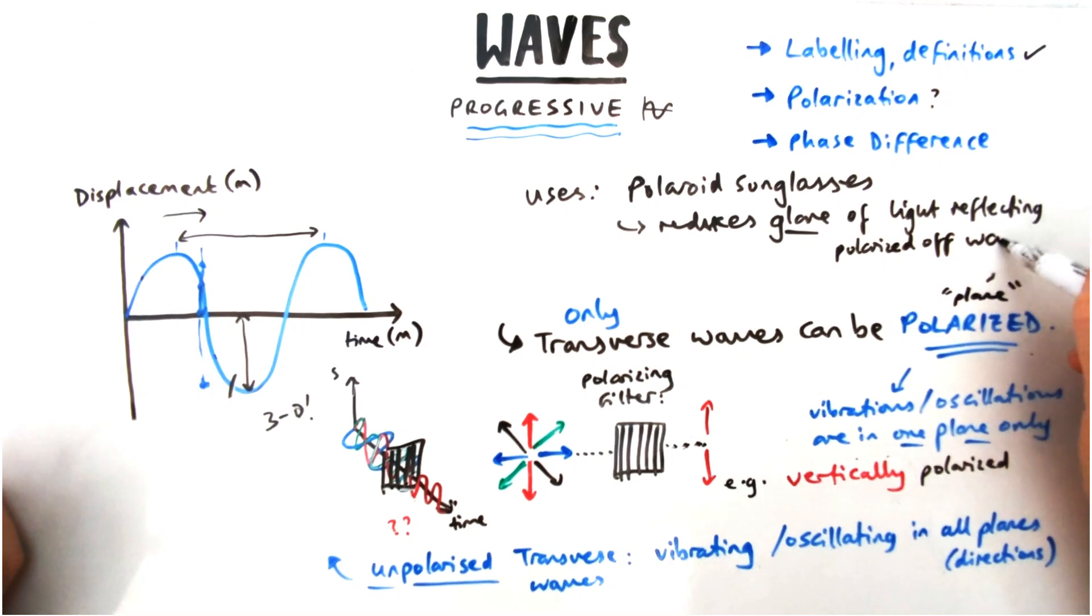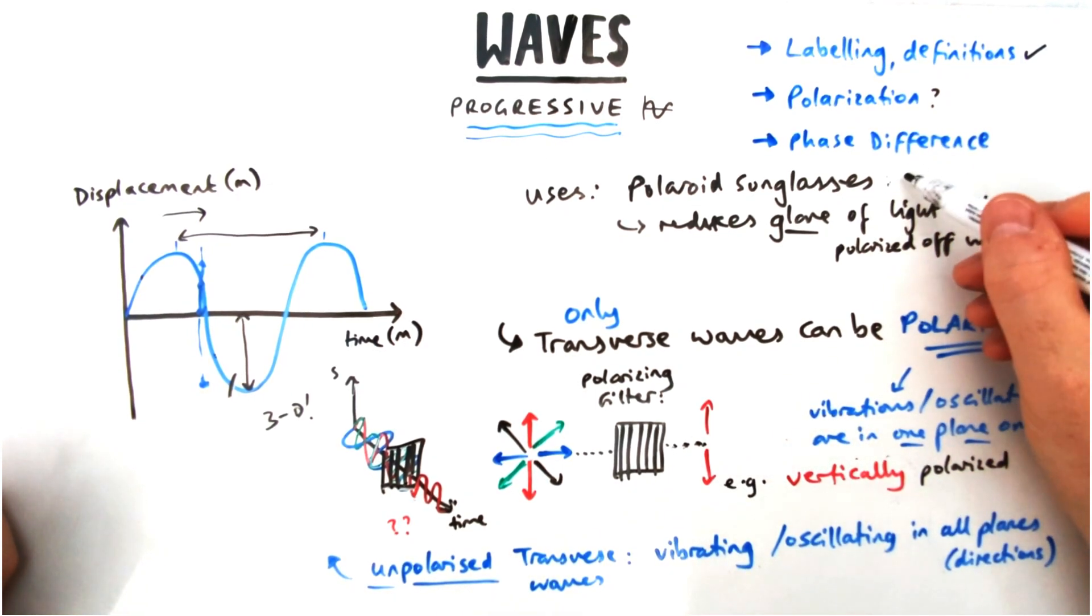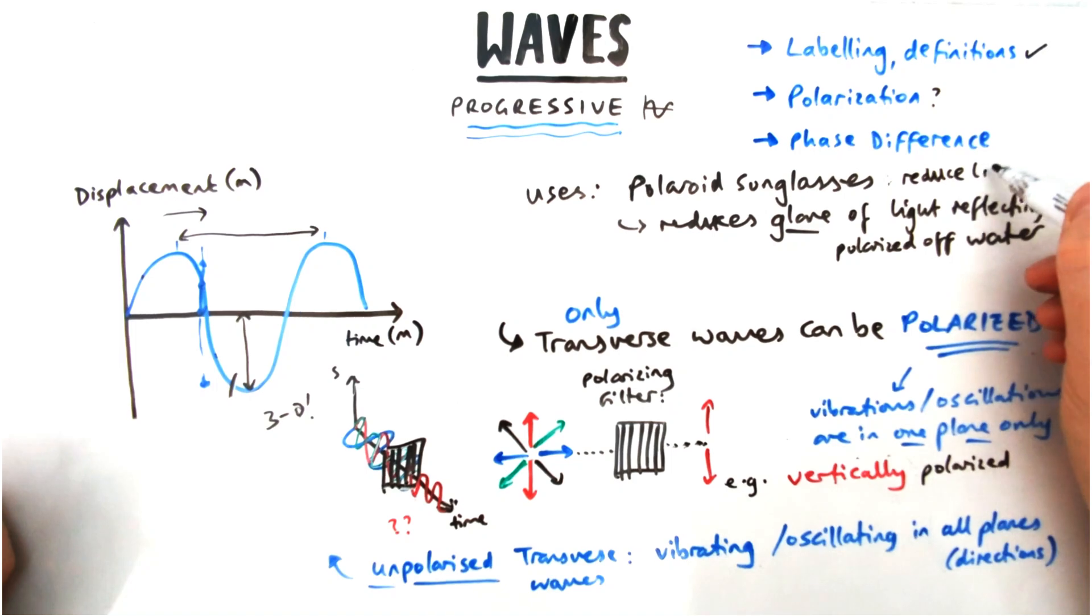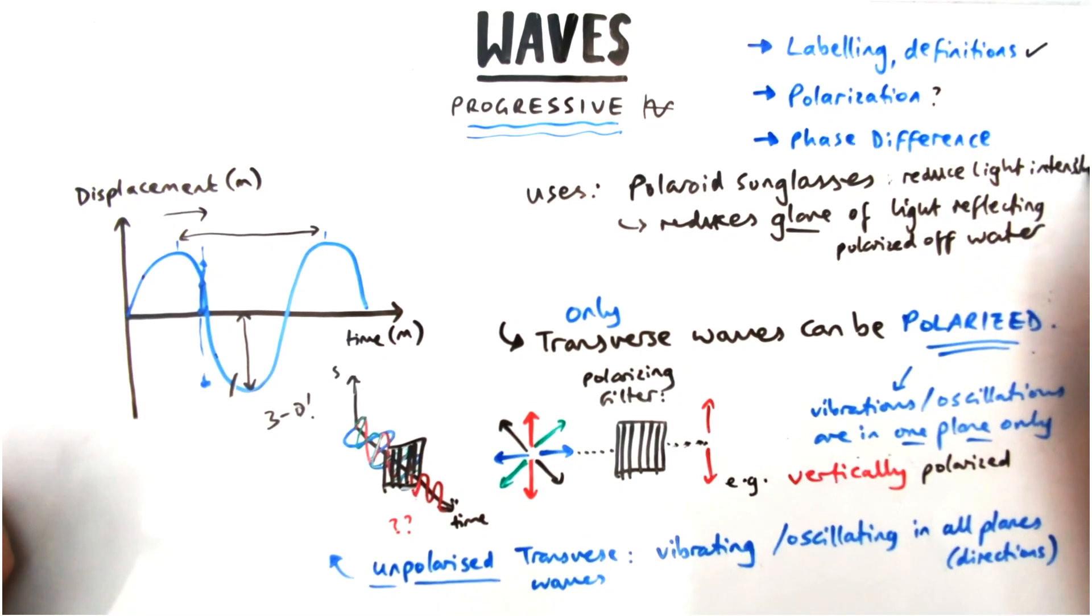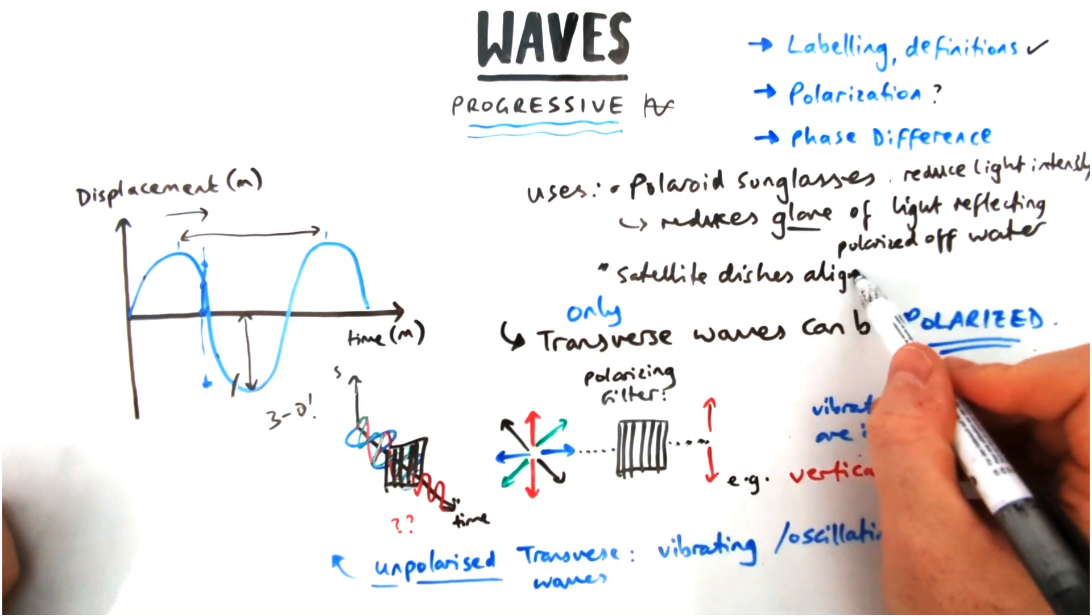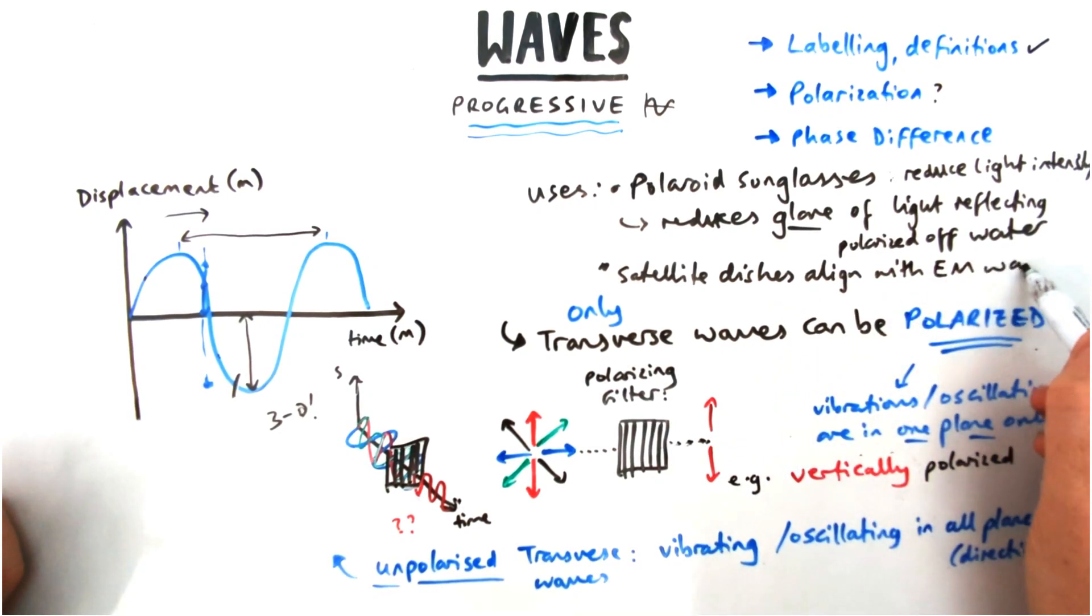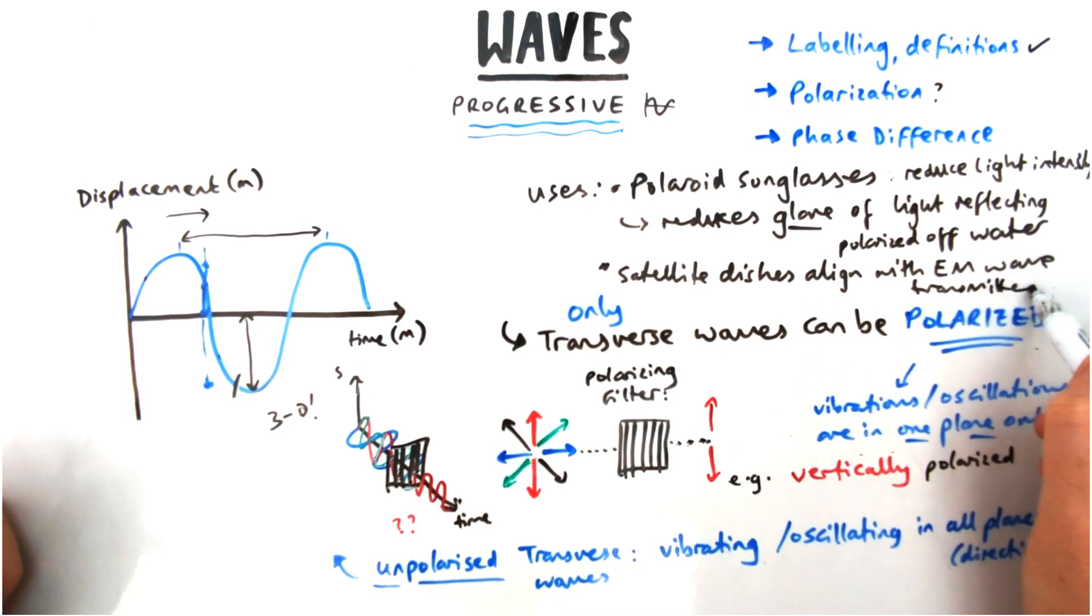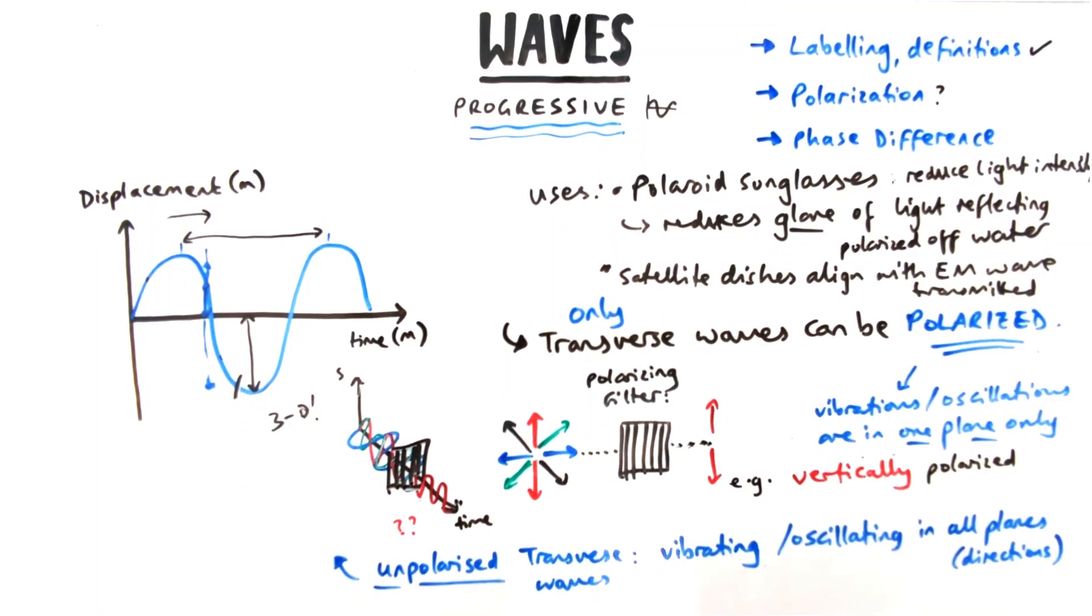If they're polarized in one direction, your polaroid sunglasses let through and in the other directions they don't let through as much glare. It reduces the light intensity in that case and it reduces the overall intensity as well, not just the glare. You might also find them in satellite dishes which have to be aligned in the correct direction for radio waves to be transmitted and received successfully.